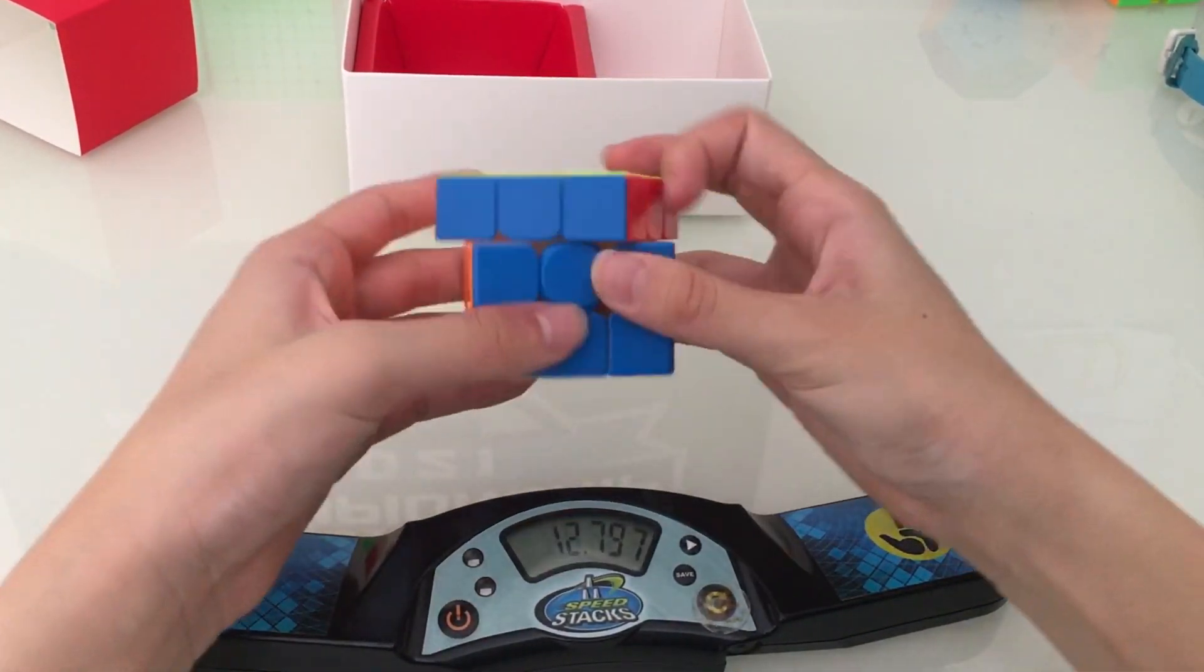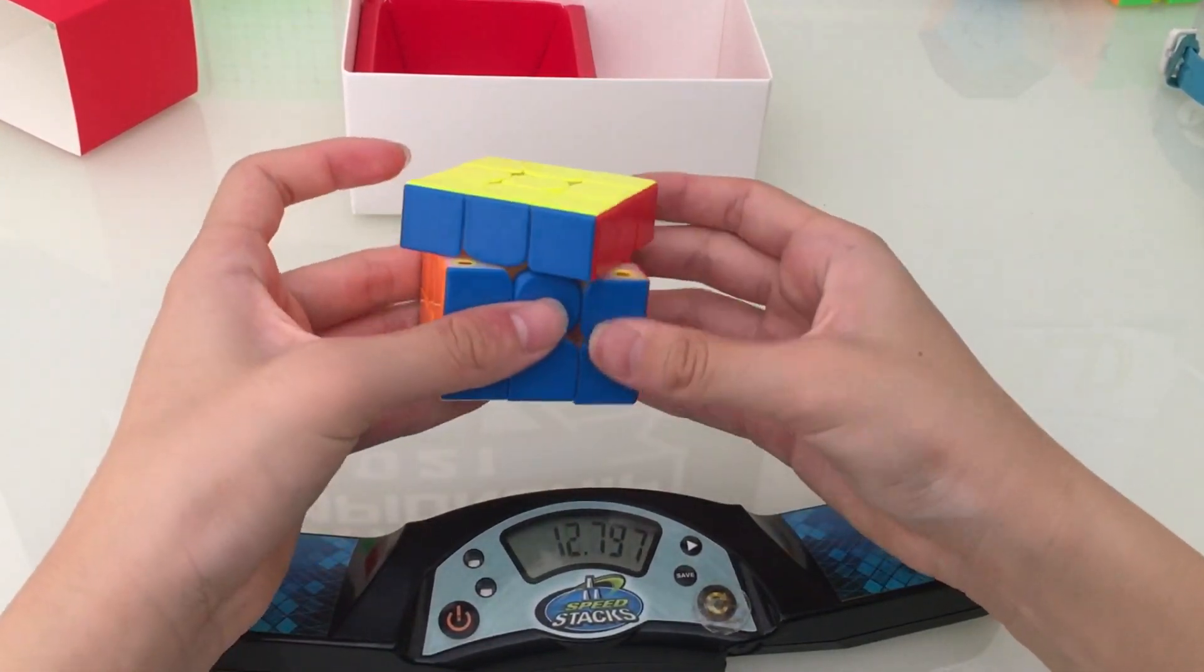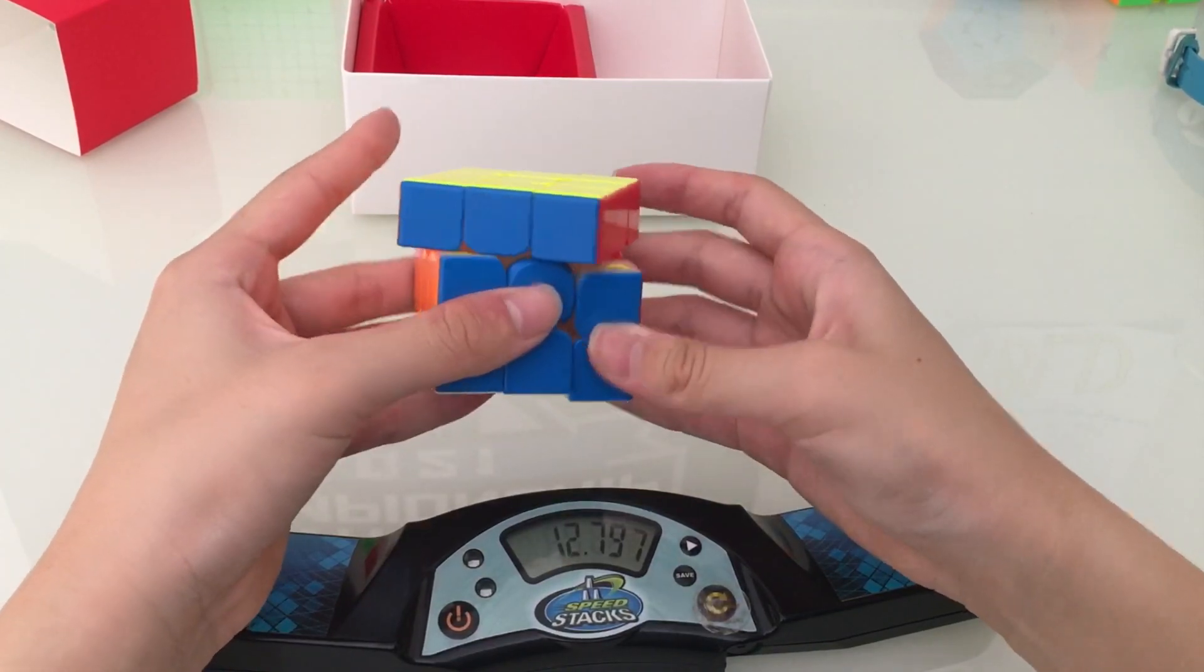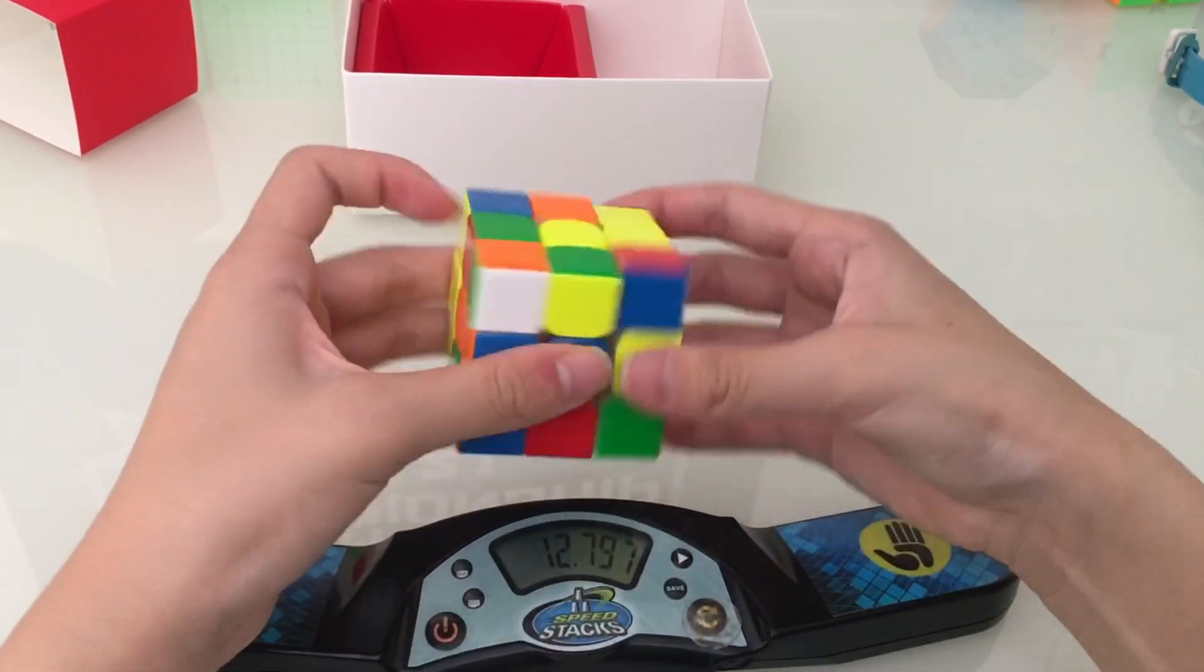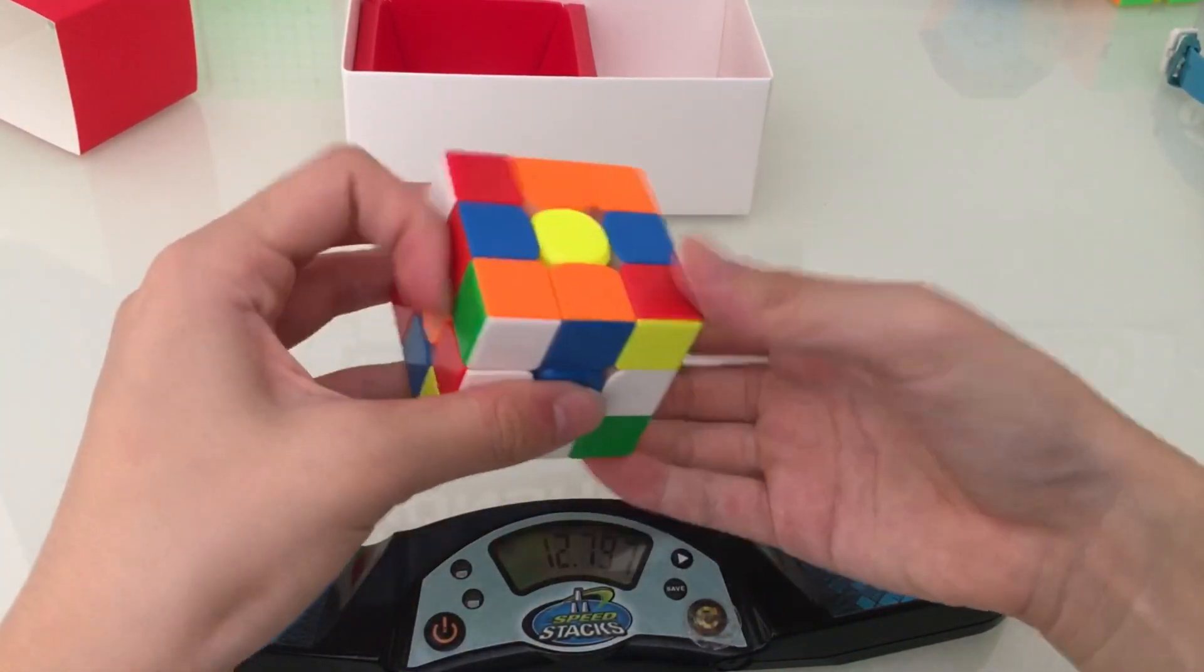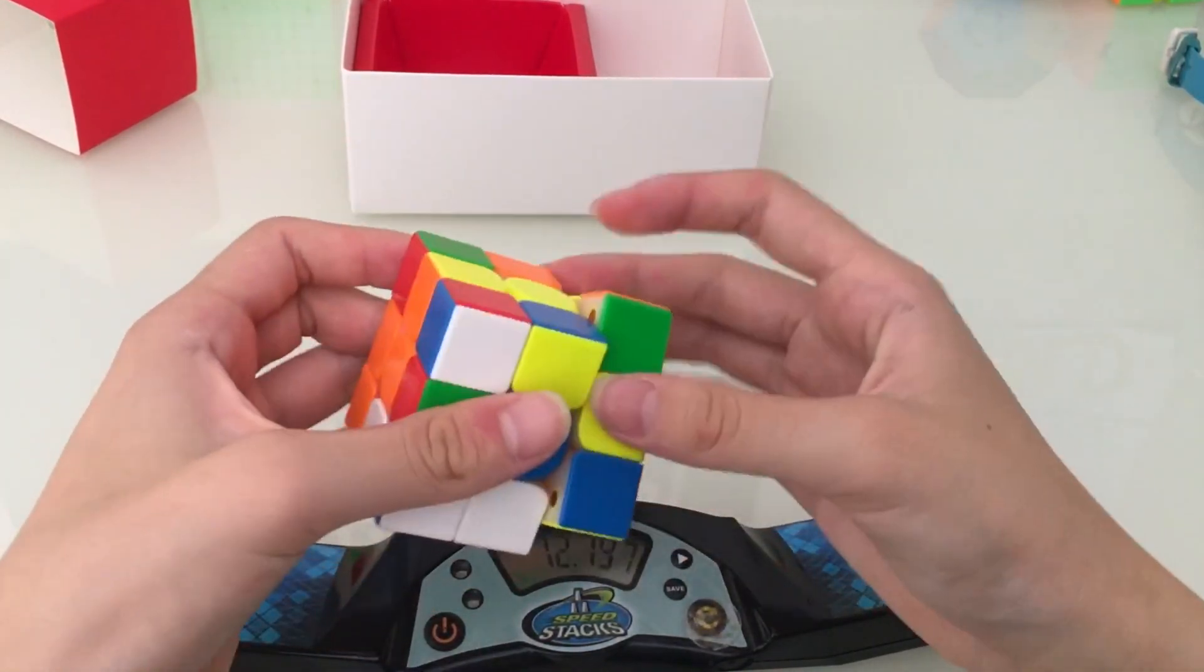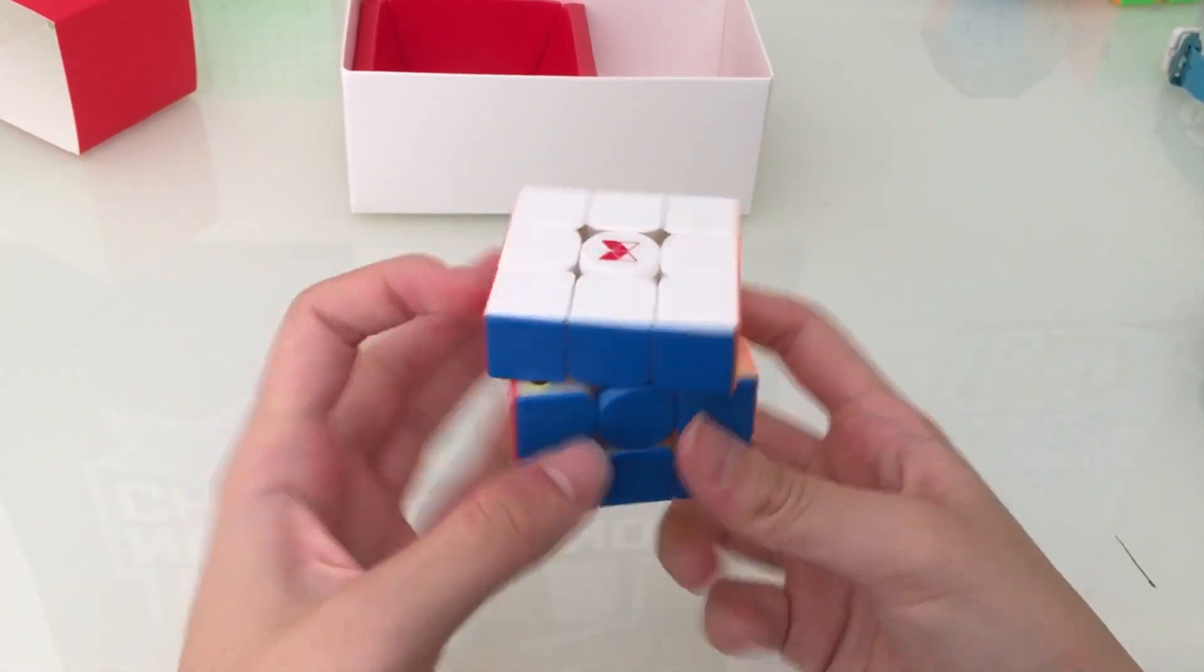And of course my first solve is a plus two. So yeah, I definitely know what people are talking about when it catches now, but it's kind of just really tight. I mean, the tangents feel good when turning it normally, but yeah, it's just pretty tight.